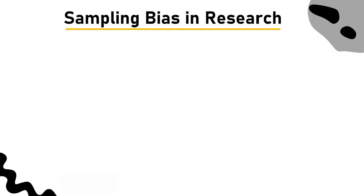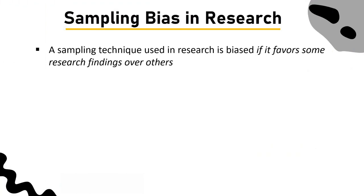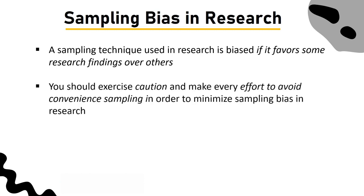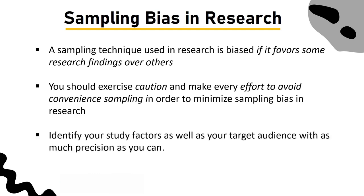Sampling bias in research: A sampling technique used in research is biased if it favors some research findings over others. Sampling bias in research can happen even when you choose your samples at random, but it is not impossible to avoid. You should exercise caution and avoid convenient sampling in order to minimize sampling bias, and identify your study factors as well as your target audience with as much precision as you can.